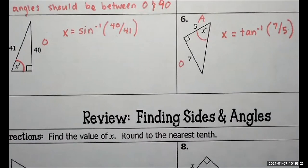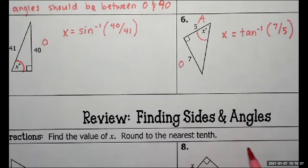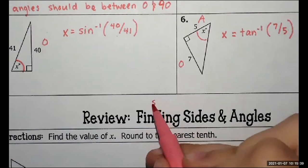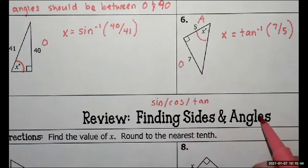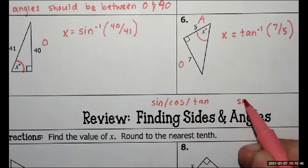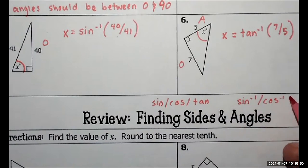Alright, so the big kicker here is how do I know when to use sine and when to use sine inverse? And the question is answered: are you finding sides or are you finding an angle? Finding sides, you use sine, cosine, and tangent. Finding angles, that's where you pull out the inverses. Sine inverse, cosine inverse, and tangent inverse.